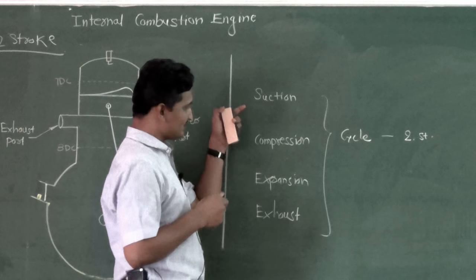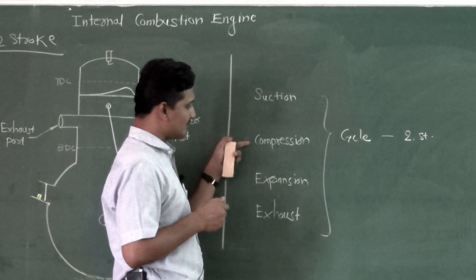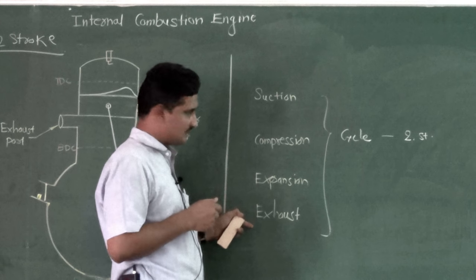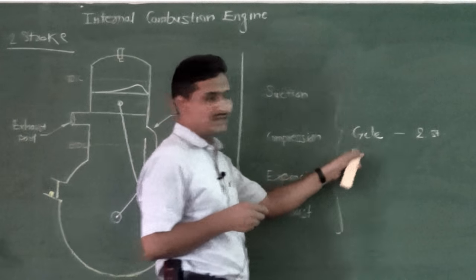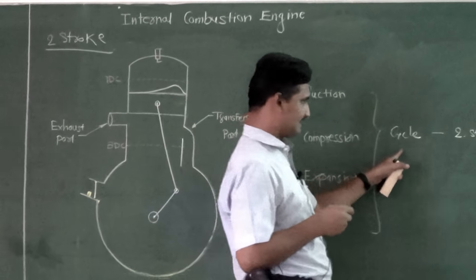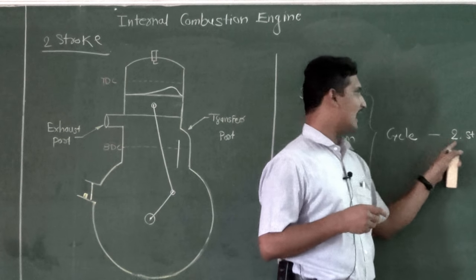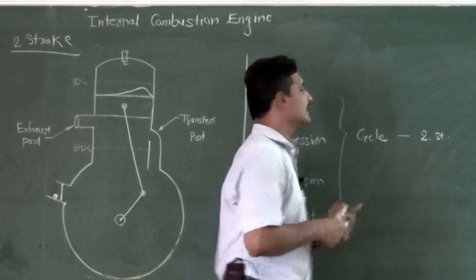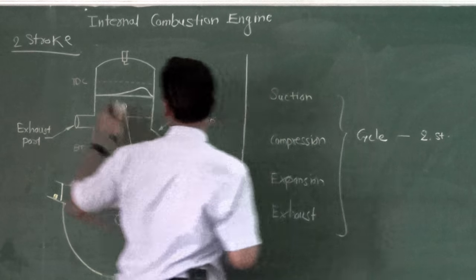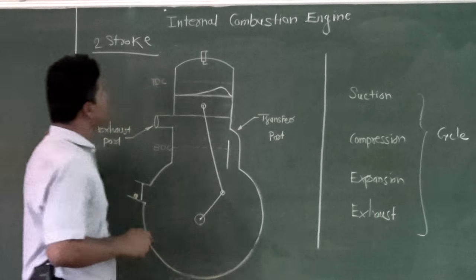These four processes — suction, compression, expansion, and exhaust — form one cycle. For completing one cycle, two strokes are required, and that's why this particular engine is called a two-stroke engine.